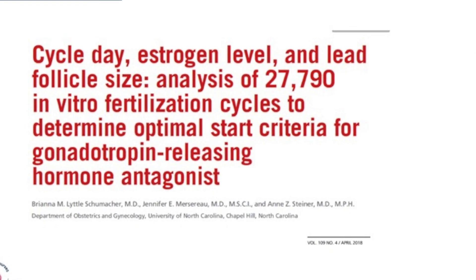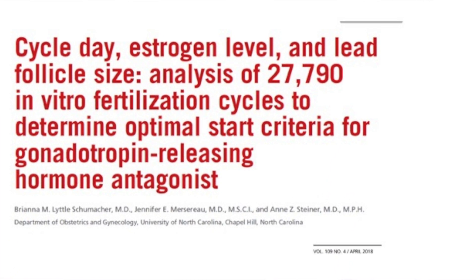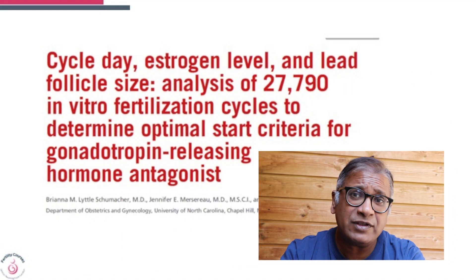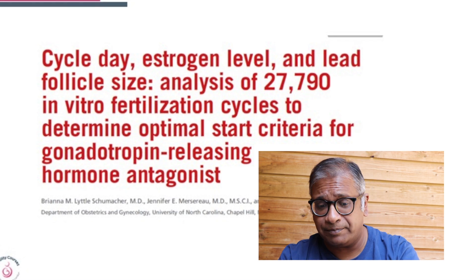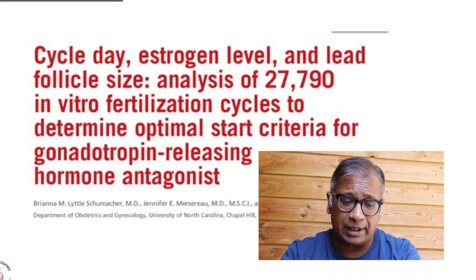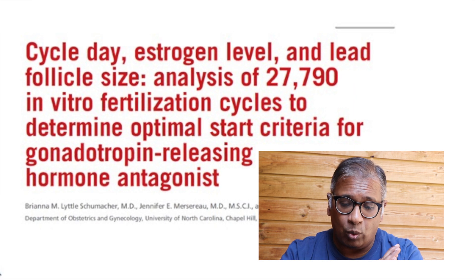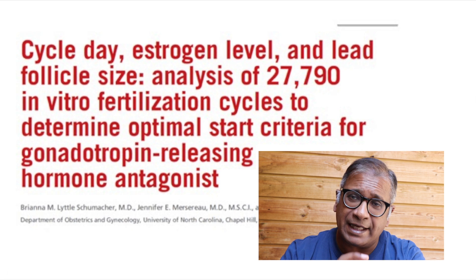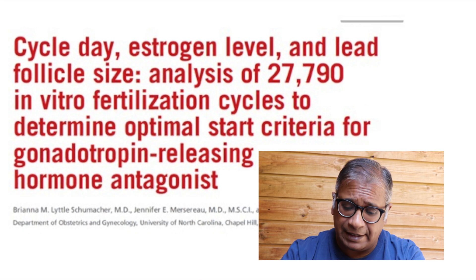Now let's have a look at how different studies are coming in. The question is: when do you start the antagonist? This is a retrospective analysis — not a randomized control trial — but it gives us insight into a large number of antagonist cycles. It analyzed over 27,000 cycles looking at cycle day, estrogen levels, and lead follicle count to decide the optimal start date of an antagonist, and was published in April 2018 in Fertility and Sterility.